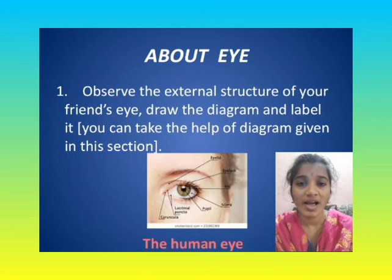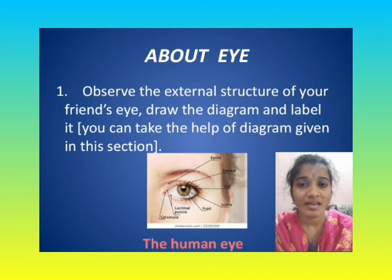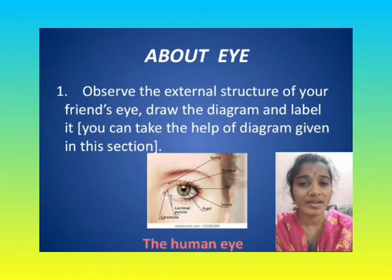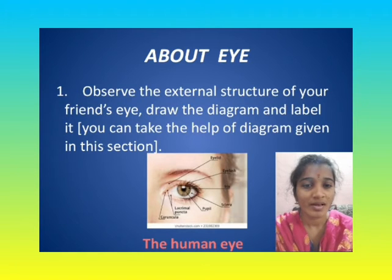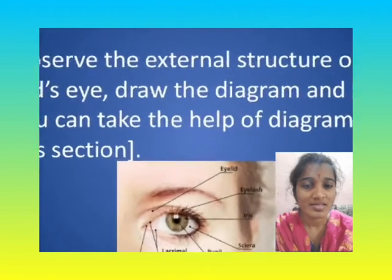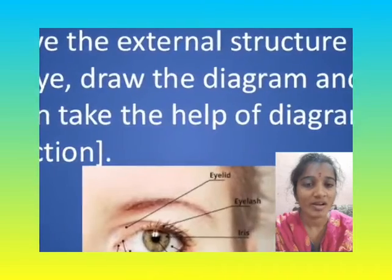About Eye. Observe the external structure of your friend's eye. Draw the diagram and label it. You can take the help of the diagram given in this section. This is the human eye.